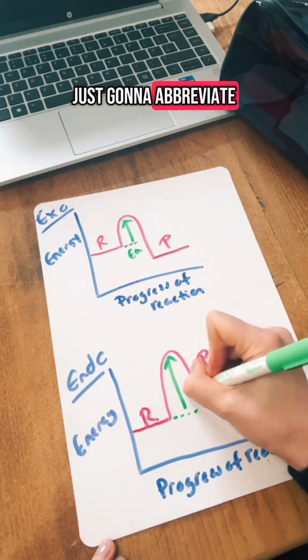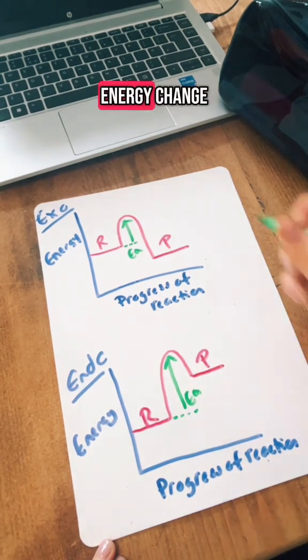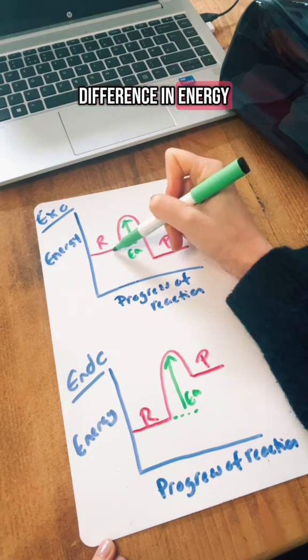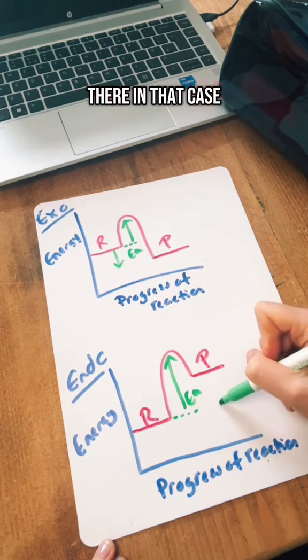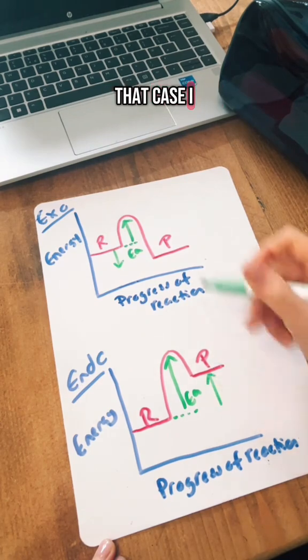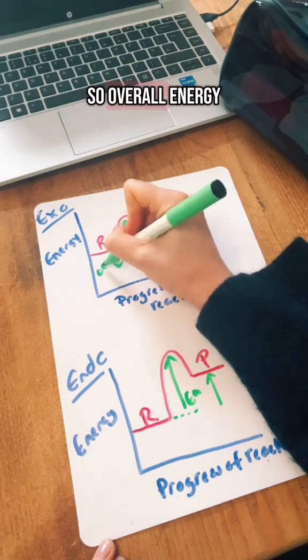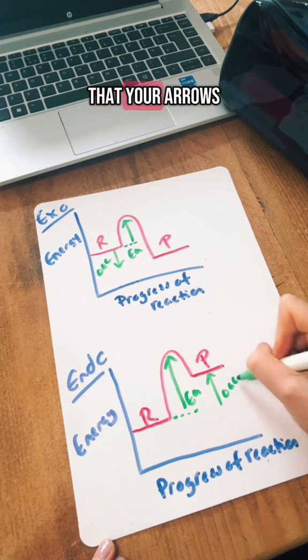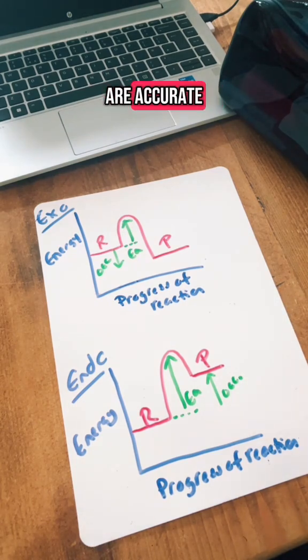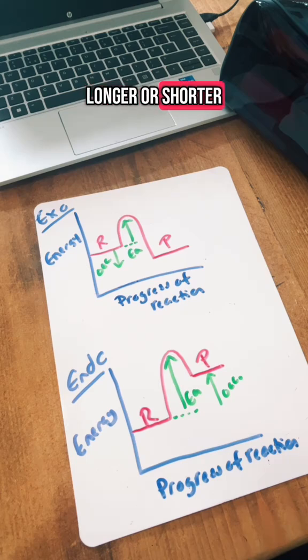I'm just going to abbreviate. The overall energy change is just the difference in energy between the reactant and the product, which would be there in that case and there in that case. I cannot stress how important it is to make sure that your arrows are accurate. They cannot be longer or shorter than that distance or you will not get the marks.